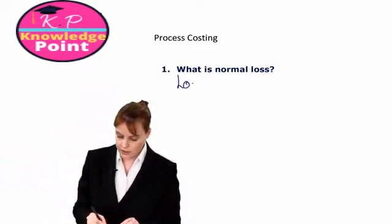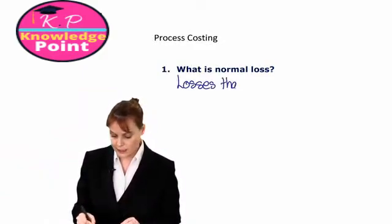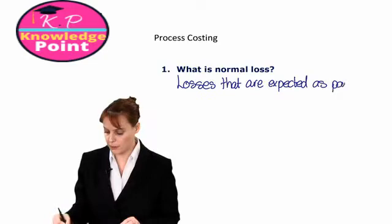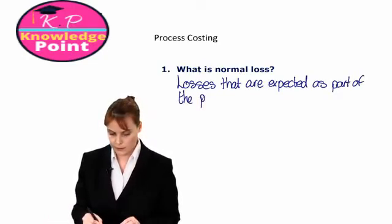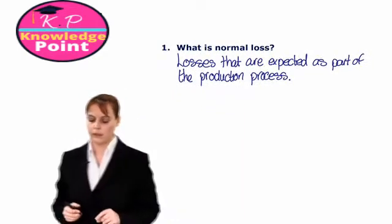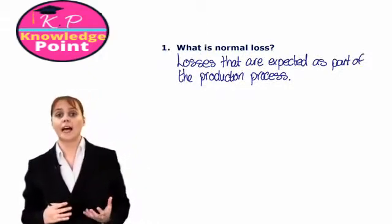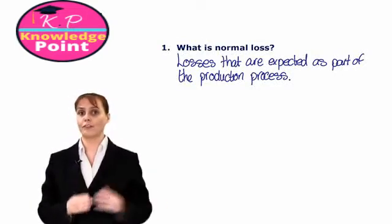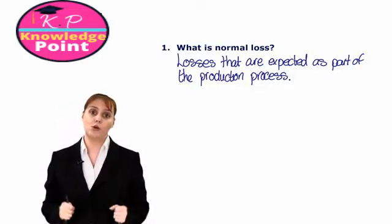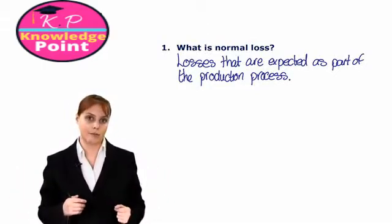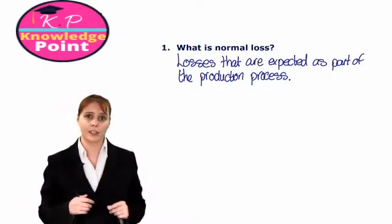Our normal loss are losses that are expected as part of the production process. Management will understand how many units they expect to lose in any given process, and will therefore plan for it in advance. For F2, what we need to understand is how we deal with normal loss in our process account, and how this affects our cost per unit calculation.